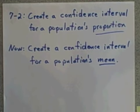In section 7-2 of the text we learned how to create a confidence interval for a population's proportion. Now we're going to talk about how to create a confidence interval for a population's mean. Please recall that both proportion and mean are what we call unbiased indicators.